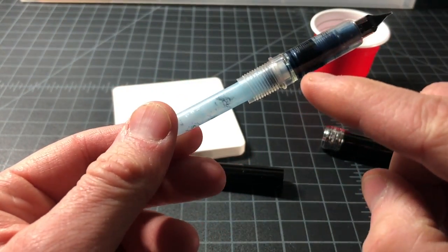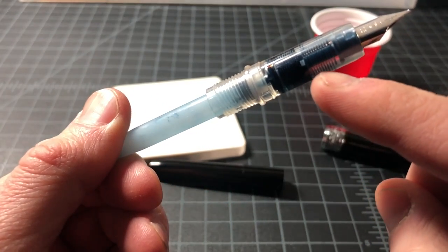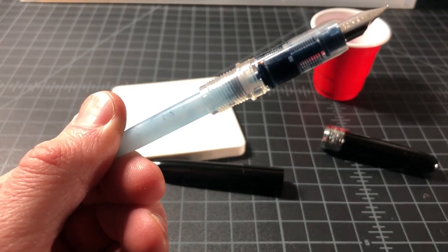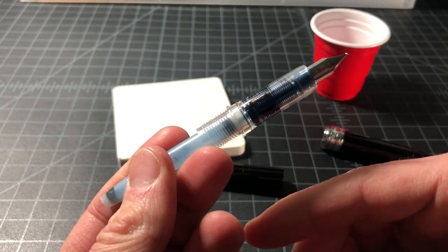There'll also be ink in here and that is particularly difficult to get out from the feed because the whole job of a feed is to hold on to ink and other things. So what do you do if you don't want to throw the pen out?